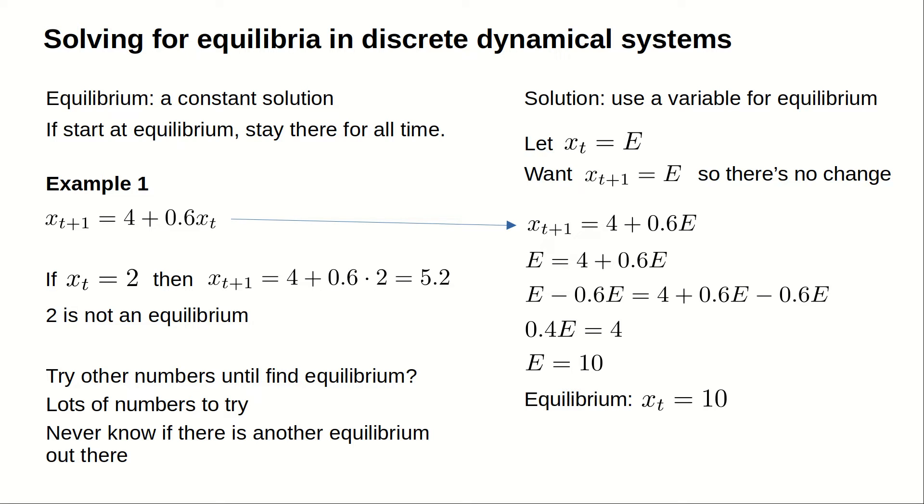We have found that x sub t equals 10 is an equilibrium of the dynamical system x sub t plus 1 equals 4 plus 0.6 x sub t. In fact, since 10 is the only value of E where 4 plus 0.6 times E equals E, we can see that we have found all equilibria. The solution x sub t equals 10 is the only equilibrium of the dynamical system.